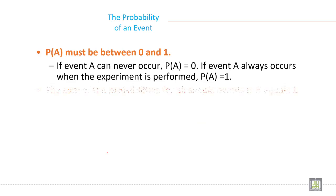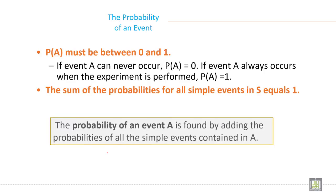P(A) must be between 0 and 1. If event A can never occur, P(A) equals 0. If event A always occurs when the experiment is performed, P(A) equals 1.